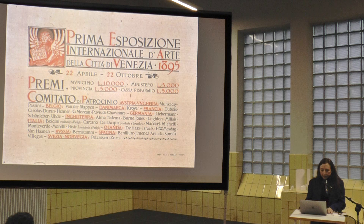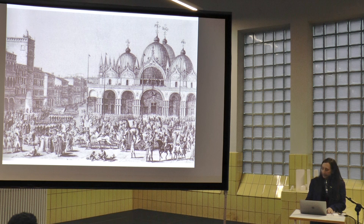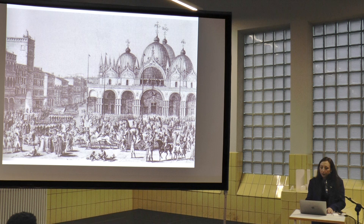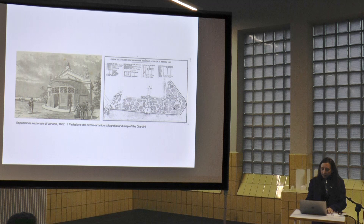The first international art exhibition of the city of Venice opened on the 22nd of April 1895. But in reality the story started well before. In 1797, Napoleon Bonaparte invaded the city of Venice, and in 1807 he validated a proposal from Venetian architect Gian Antonio Selva for the demolition of the furthermost part of the Castello Quarter and the planning of a new public garden for Venice — the Giardini.